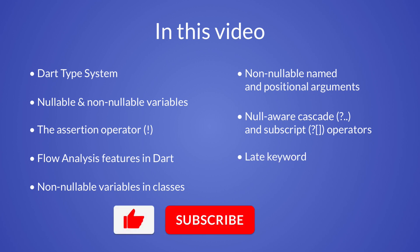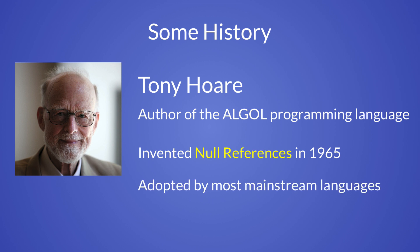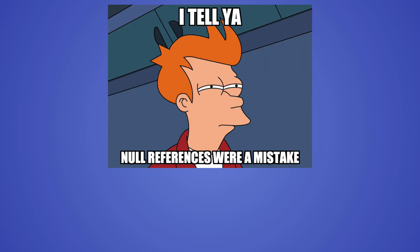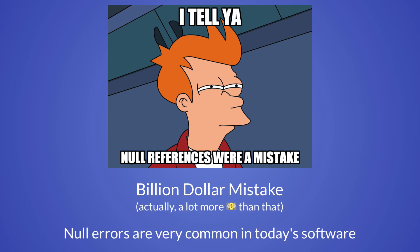We will also cover the null aware cascade and subscript operators, learn about the late keyword, and see what's changed with static and global variables. But before we get to that, we need a short history lesson. Null references were first introduced in 1965 in the Algol programming language, and since then they have been called the billion dollar mistake, because null errors have become incredibly common across a lot of the software we use today.